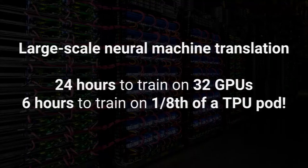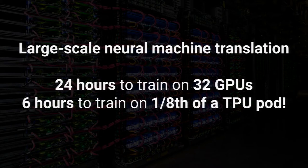The performance result we've released so far is on one of our large-scale neural machine translation models. It used to take 24 hours to train the model to a certain accuracy on a cluster of 32 of the best commercially available GPUs. Now we can do that in just six hours on just an eighth of this big TPU pod. There is lots more work ongoing, and I hope to have great new benchmarks to share soon.